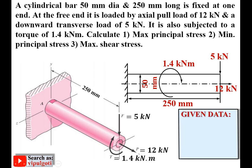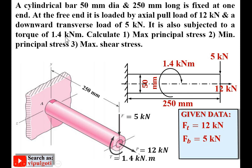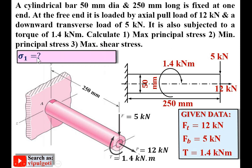Write down the given data: cylindrical bar, diameter d = 50 mm, length = 250 mm. Axial pull load FT = 12 kN (tensile load). Downward transverse load FB = 5 kN — this load is responsible for creating bending stress in the rod. Torque T = 1.4 kN·m. Find: maximum principal stress σ1 = ?, minimum principal stress σ2 = ?, maximum shear stress τmax = ?.